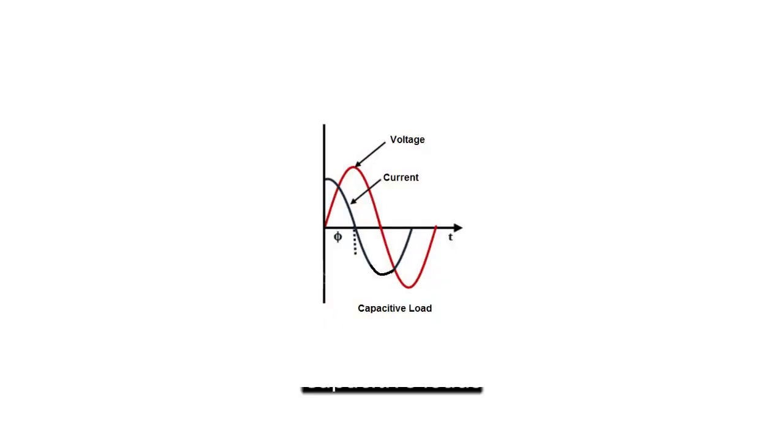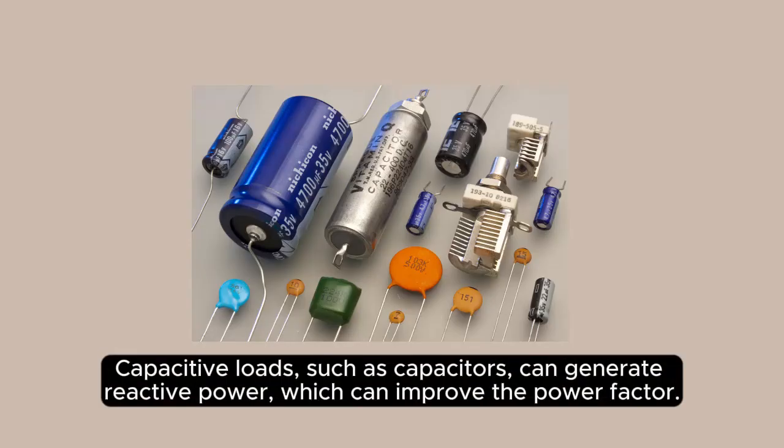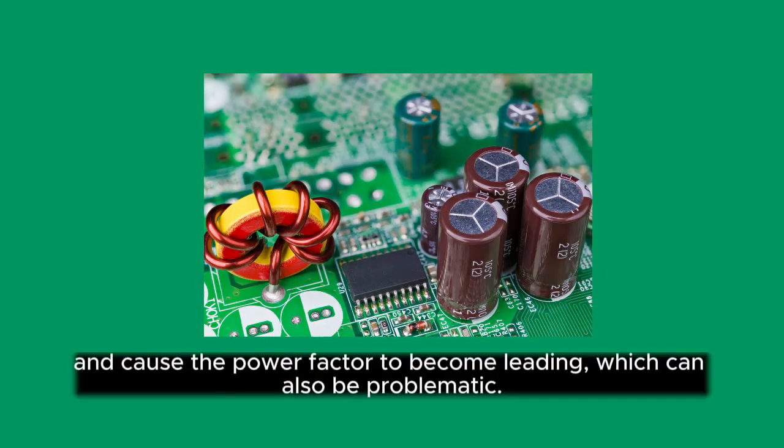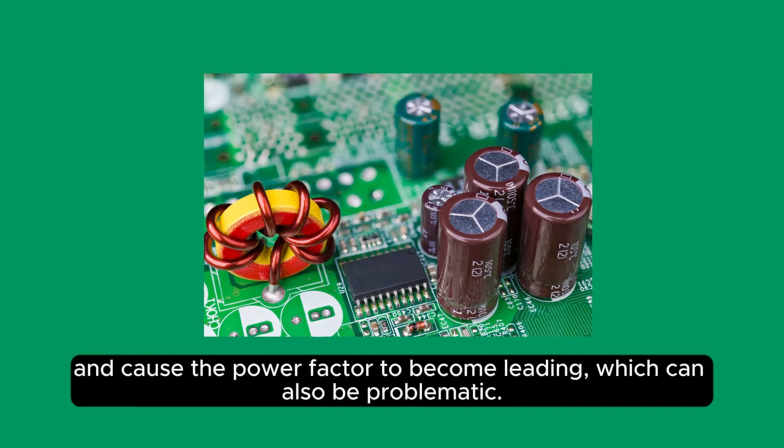Capacitive loads, such as capacitors, can generate reactive power, which can improve the power factor. However, if the capacitive load is too large, it can lead to overcorrection and cause the power factor to become leading, which can also be problematic.